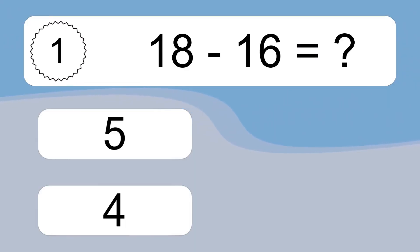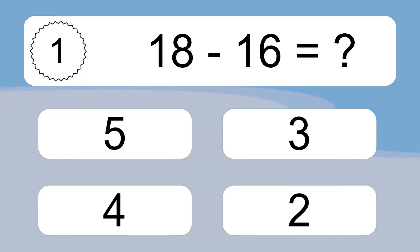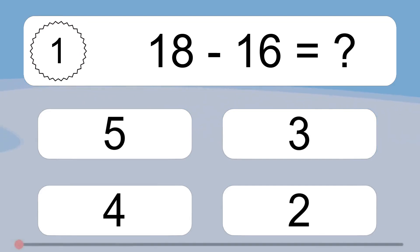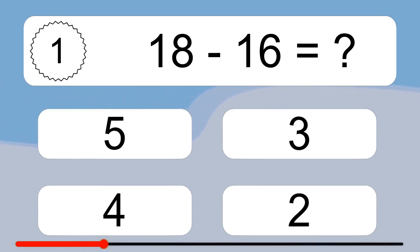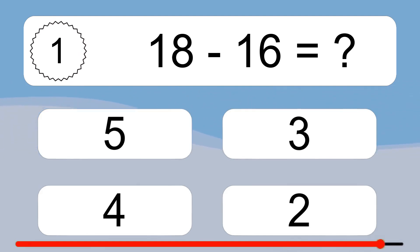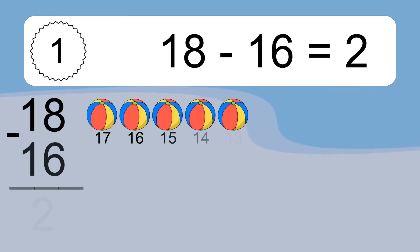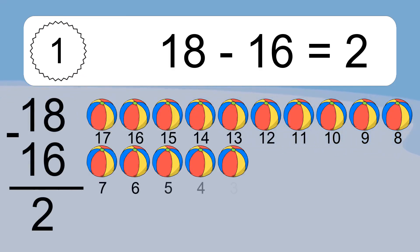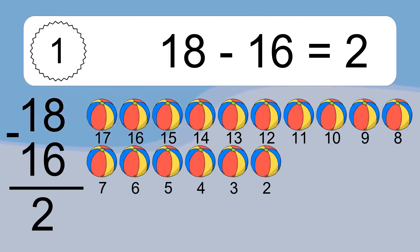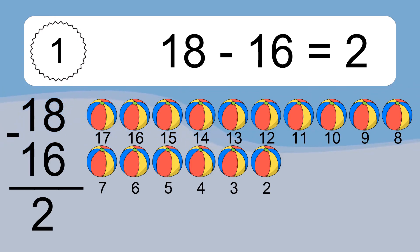18 minus 16 equals what? 18 minus 16 equals 2. Let's count it: 17, 16, 15, 14, 13, 12, 11, 10, 9, 8, 7, 6, 5, 4, 3, 2.